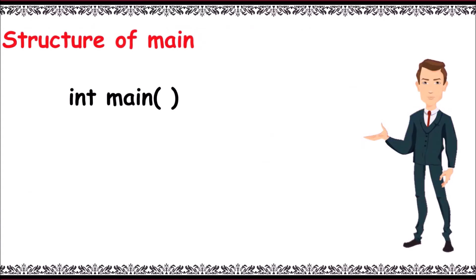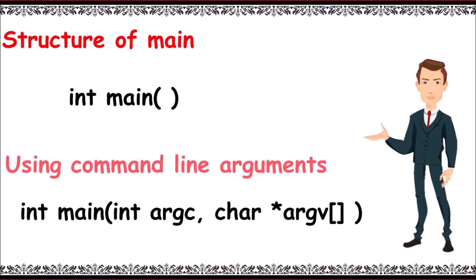Now let's take the normal structure of main. We write return type int space main with no arguments in it. And then if we are passing arguments from command line, we write main as main of int argc comma char asterisk argv of empty brackets.